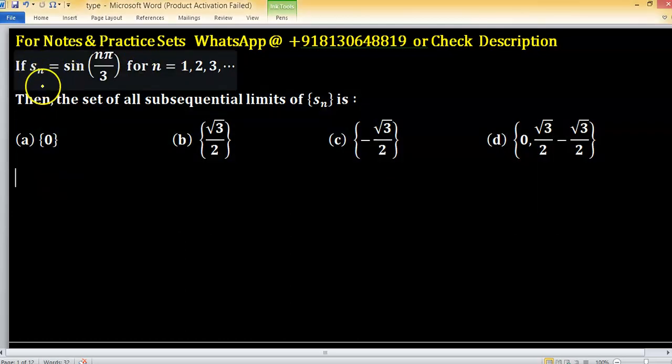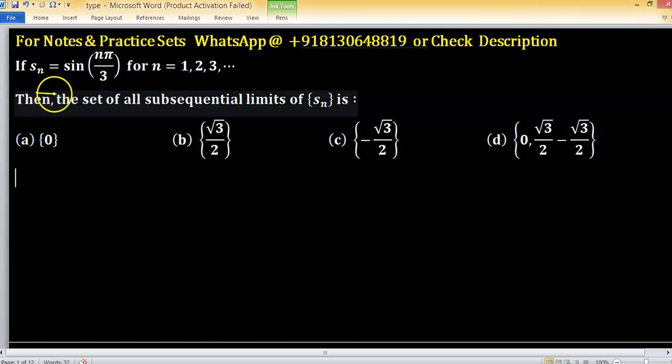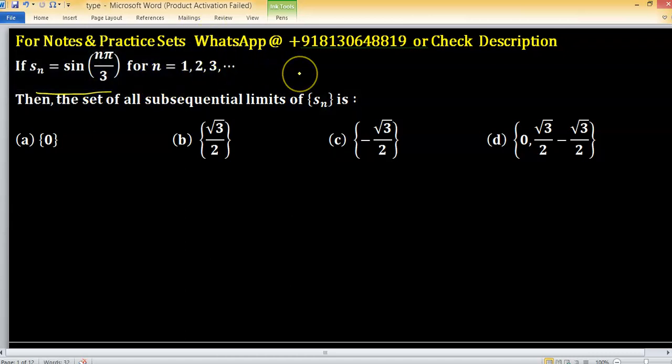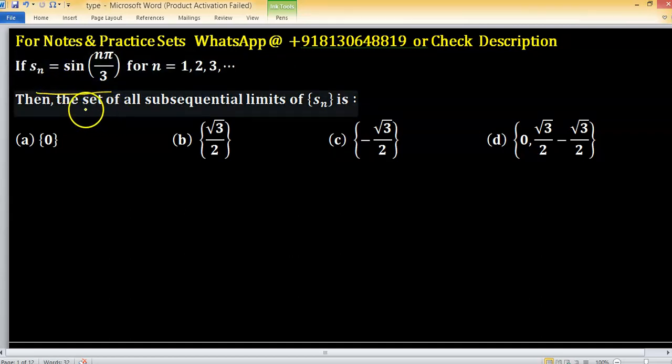A sequence Sn is given to you in terms of sine function for n equals to 1, 2, 3, because the domain of sequence is the set of natural numbers. Now we have to find the set of all subsequential limits of Sn.